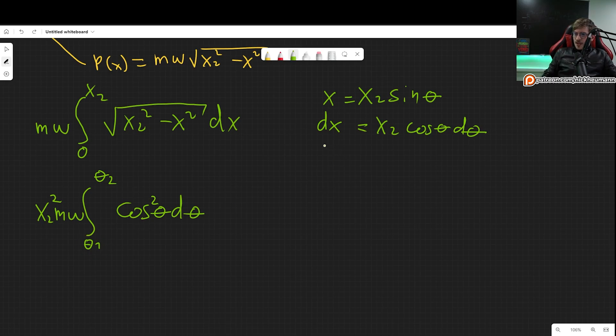So what is theta 1? So theta 1 is the equivalent of our previous limit here, which was 0. So if x was 0, we needed sine of theta to be 0, which happens at theta 0. And theta 2 corresponds to x2, which, if this is x2, we need sine of theta to be pi over 2. So there we go. Those are our new limits.